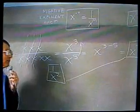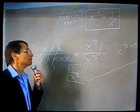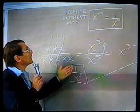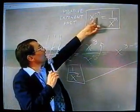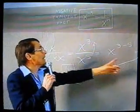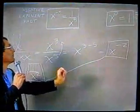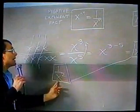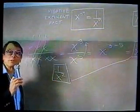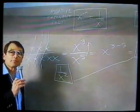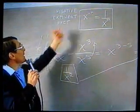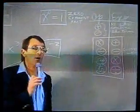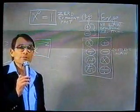Things equal to the same thing are equal to each other is a famous axiom, not only of mathematics, but of life. So we have that anything to a negative exponent, like x to the minus two power equals one over that same base to the positive of that exponent. That's what we call the negative exponent fact, and once again it derived easily from the quotient law of exponents.